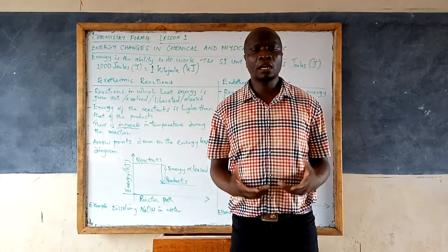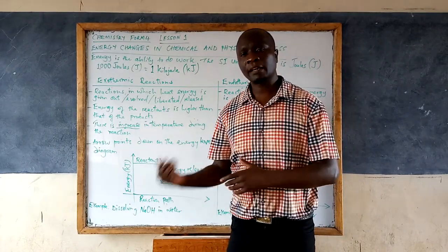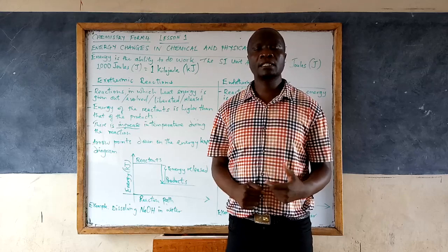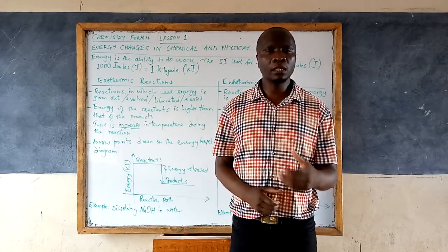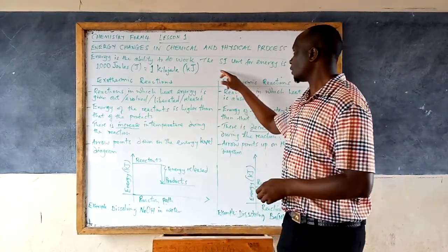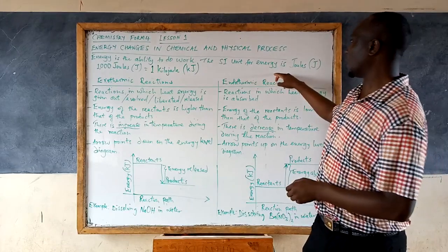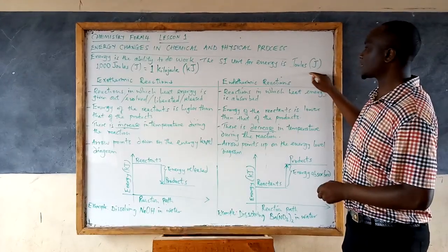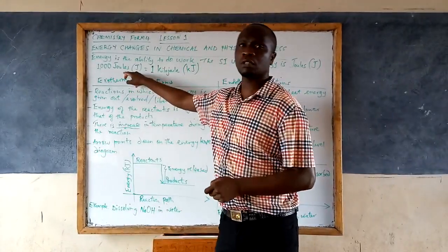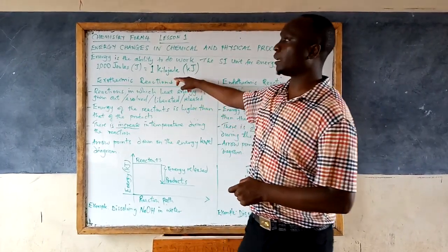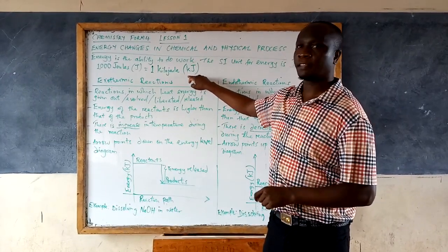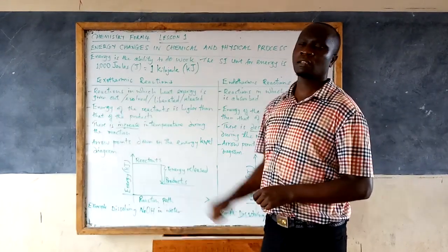That's an example in which one form of energy is converted into another form of energy. Energy is expressed in joules. The unit for measuring energy is joules — the SI unit for energy is joules, with symbol capital J. 1,000 joules is equivalent to 1 kilojoule. The unit is KJ, where K is small and J is capital.